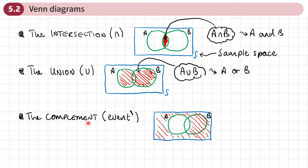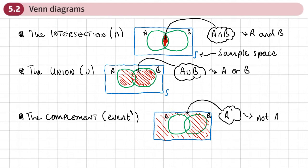Then lastly, we've got something called the complement. Normally we would see an event like A with a little dash here. Here you can see that everything that's not in A is shaded, so we write it as A with a little dash — that means not A. We know from GCSE that the probability something's not going to happen is 1 minus the probability it's going to happen. So the probability of A not happening, A', is 1 minus the probability of A happening. This is actually our first formula to do with probability.